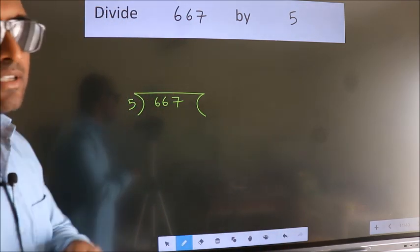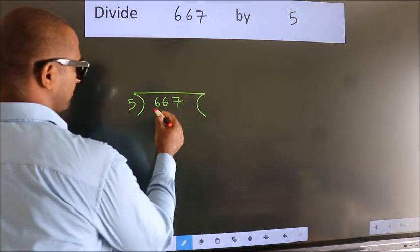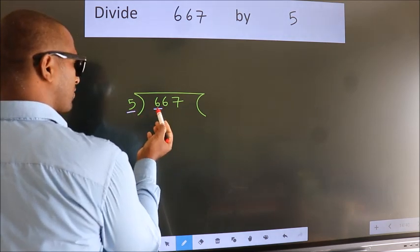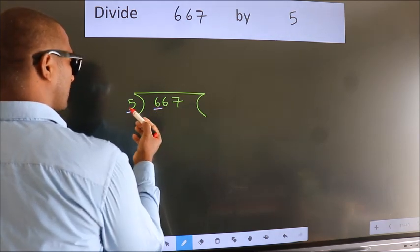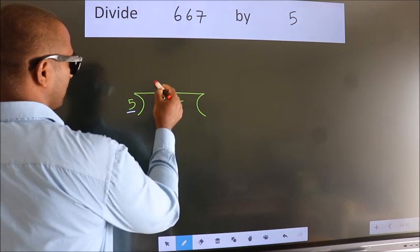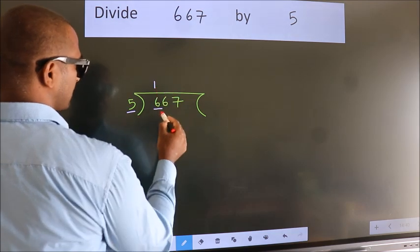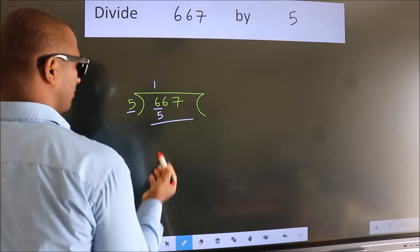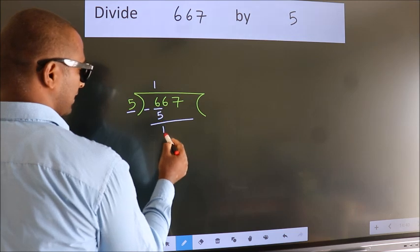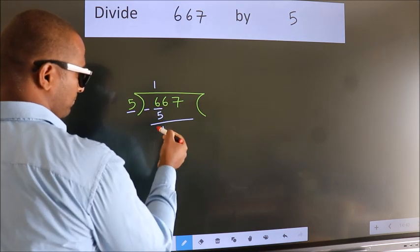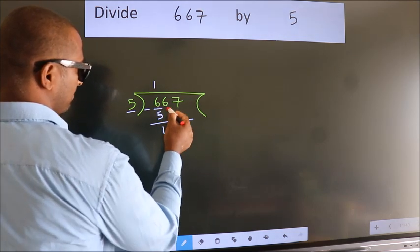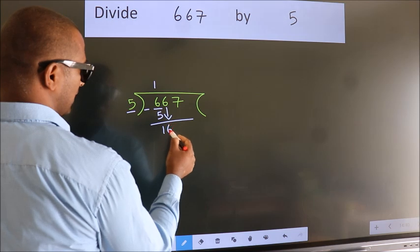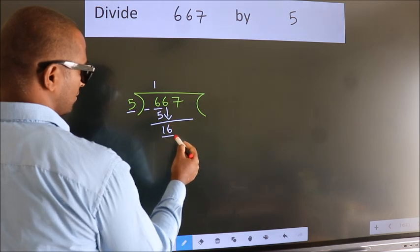Next, here we have 6, here 5. A number close to 6 in the 5 times table is 5 once 5. Now we should subtract. We get 1. After this, bring down the beside number. So 6 down. So 16.